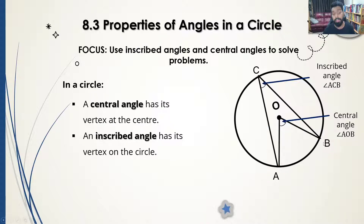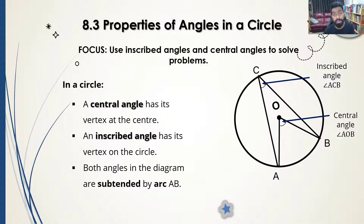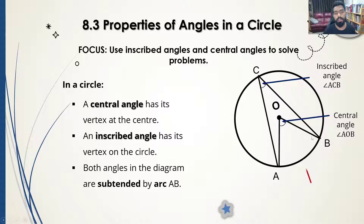The central angle and the inscribed angle must share the same arc. In this case, both start at the same point and end at the same point — they start at A and end at B. That's an easy way to understand the relationship.